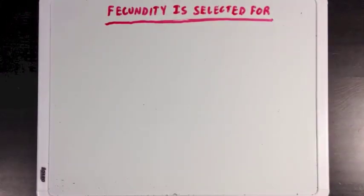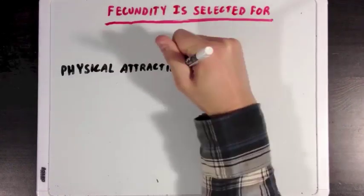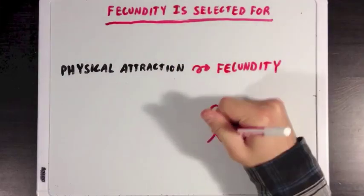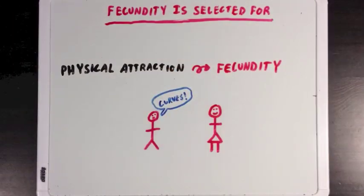Now, another interesting way that fecundity is selected for has to do with mate selection. When looking for a female mate, many males associate an attractive woman with words like curvy. And a curvy female would be one that has a healthy and robust body that was fit for bearing children. And this ability to easily bear children is a direct indicator of high fecundity.